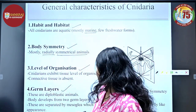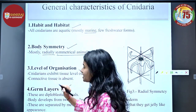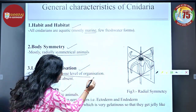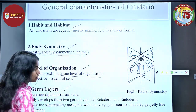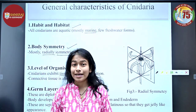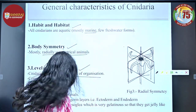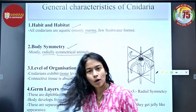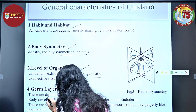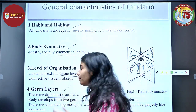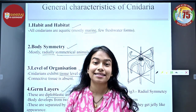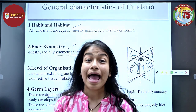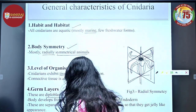Moving to level of organization: cnidarians exhibit tissue level of organization, and connective tissue is absent in them. Most importantly, cnidarians are diploblastic animals, meaning they have two germ layers — ectoderm and endoderm — separated by mesoglea.